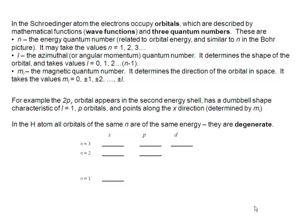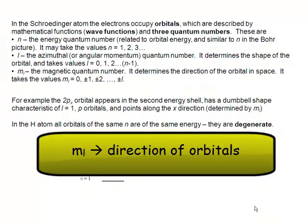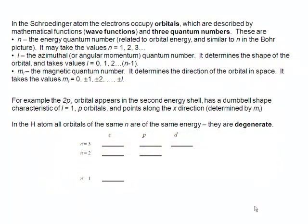We need a third quantum number, which has the sign m subscript l. And this is referred to as the magnetic quantum number. It's called the magnetic quantum number because its consequences are most easily observed in the presence of a magnetic field. And this is the thing that determines the direction of the orbital in space. So, for example, if you've got a p orbital, then the p orbital can point in the x, the y, or the z direction. And that x, y, or z comes about because of the ml value.